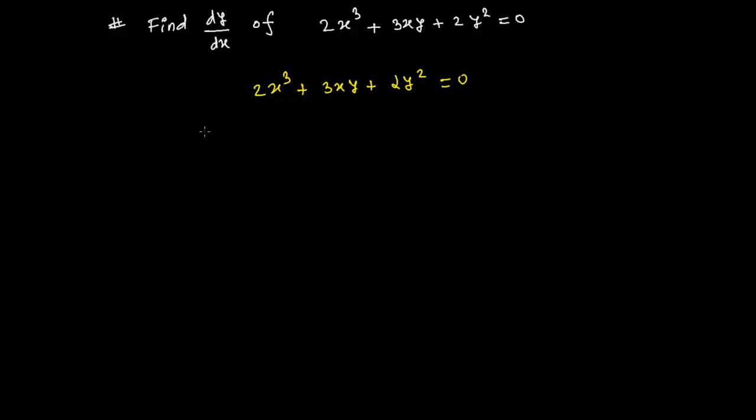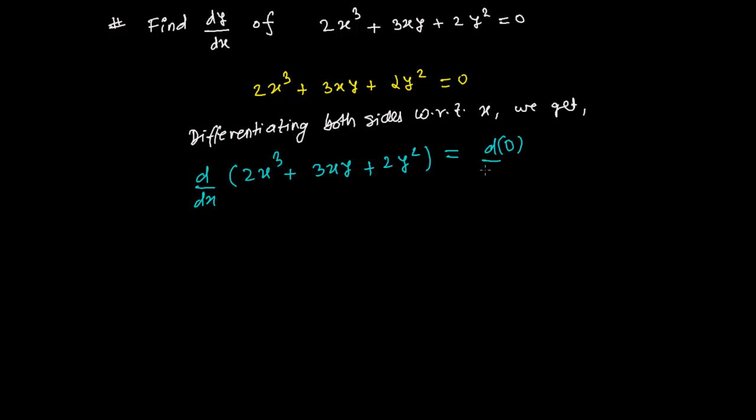Let's differentiate both side with respect to x. We get now d by dx of this whole quantity: 2x³ + 3xy + 2y² equals to now derivative of 0 with respect to x. Both sides are now differentiating with respect to x. Now what I'm going to get, this is a kind of sum of terms. So I'm going to use the sum rule. Means one by one, first I will find derivative of this term and then second term and then third term.